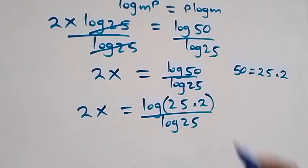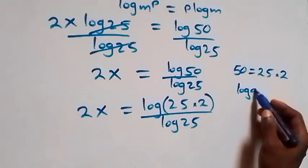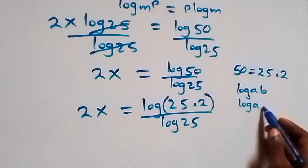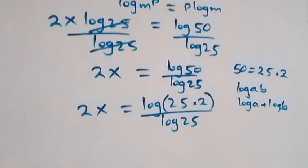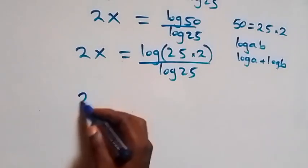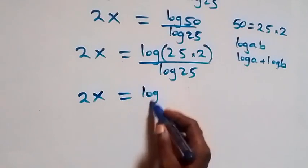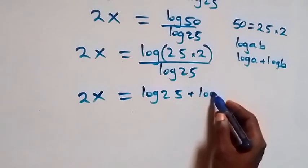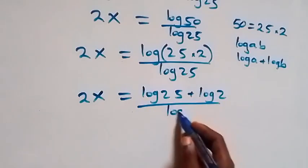From the law of logarithm, log(a times b) is the same as log a plus log b. So here we have 2x equals to log 25 plus log 2, all over log 25.